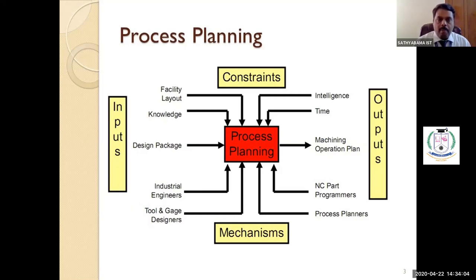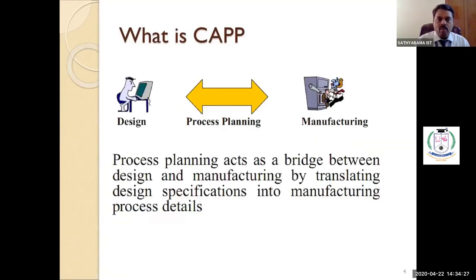While preparing the process planning, they will consider the constraints in a manufacturing industry or the constraints of a part to be produced, and then they will consider the mechanisms used for creating that particular process. Next, we can move on from process planning to computer-aided process planning. Computer-aided process planning acts as a bridge between design and manufacturing by translating the design specifications into manufacturing process details.